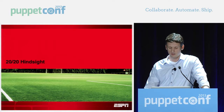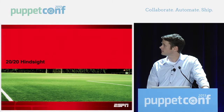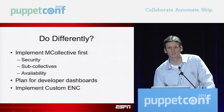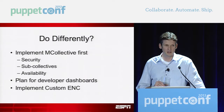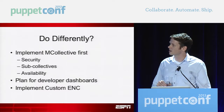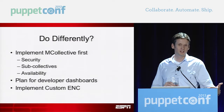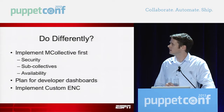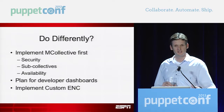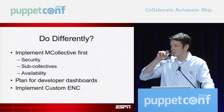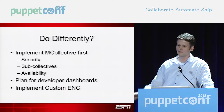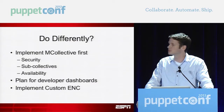Doing our 20/20 hindsight — what would we do differently? We would definitely implement MCollective first. We already had Puppet out and running when we went back and put in MCollective. We ran into issues with our firewalls and availability had problems at first. Once we were moving to MCollective to do all our Puppet runs, it became kind of a pain. We were early adopters here so all the documentation online wasn't up to date — it looks like everything is there now, so implementing today would be much smoother. But I would definitely implement MCollective first and get in the habit of using it to actually manage your environment.